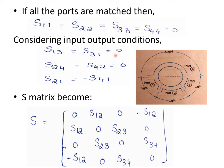Similarly, if input is applied at port 2, it appears at port 1 and port 3, but nothing appears at port 4. So S24 and S42 will be zero. Incorporating these input-output conditions reduces the S-matrix, and we now need to find the values of S12, S23, and S34 to complete the S-matrix for a rat race junction.